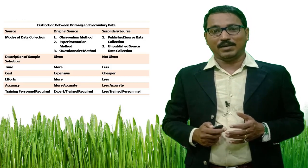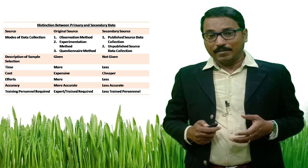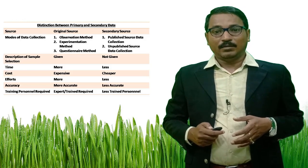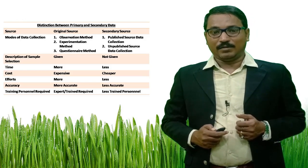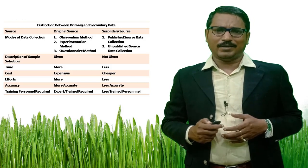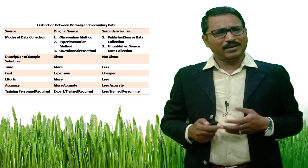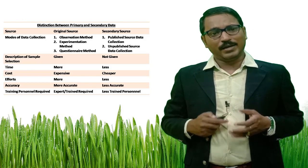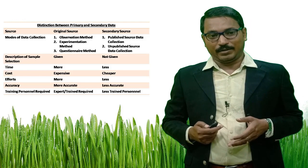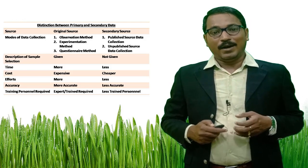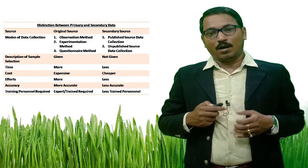On the basis of description of sample selection, in case of primary data it is given, but in case of secondary data it is not given. For collecting primary data, the time required is more, while for secondary data the time required is comparatively less. Primary data is more accurate while secondary data is less accurate. In order to collect primary data, you need expert trained personnel, while for secondary data you need less trained personnel.